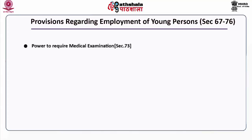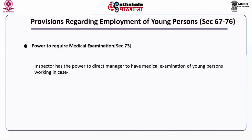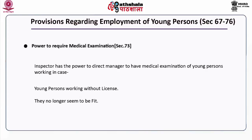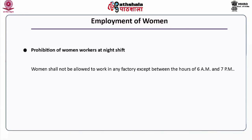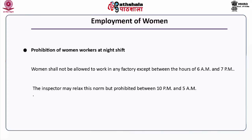Section 73, power to require medical examination: the inspector has the power to direct the manager to arrange medical examination of young persons working in a factory, particularly where they are working without a certificate or are no longer seemingly fit. Employment of women: women shall not be allowed to work in any factory except between the hours of 6 am and 7 pm. The inspector may relax this norm but it is prohibited between 10 pm and 5 am. Working hours for women are not more than 48 hours a week and 9 hours a day.